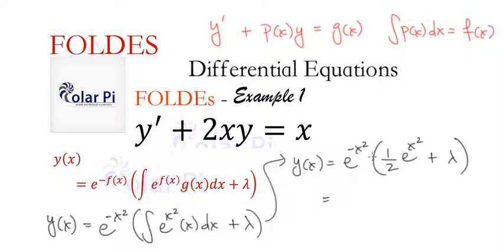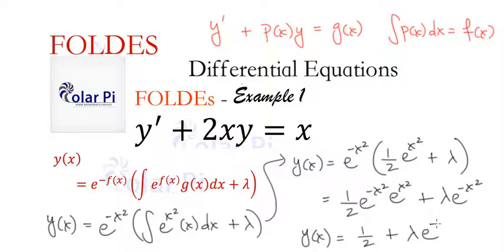So we have one half e to the negative x squared times e to the x squared and then plus lambda times e to the negative x squared. Now notice by exponent rules that this is just one, so our solution y of x equals one half plus lambda e to the negative x squared.